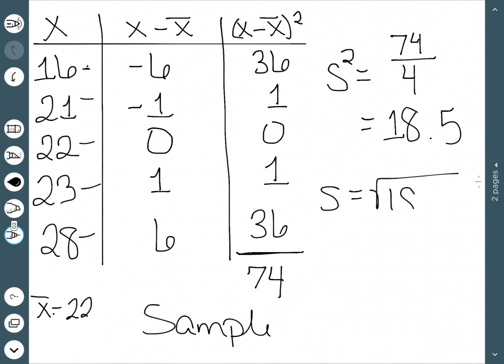For standard deviation, we just need to take the square root of that to get 4.301 as our sample standard deviation.